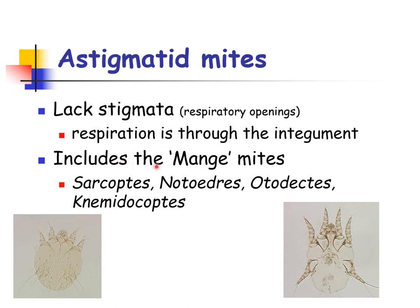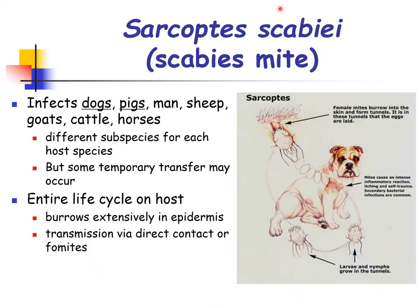The mange mites include Sarcoptes, Notoedres, Otodectes, and Knemidocoptes. Starting with Sarcoptes scabiei, also known as the scabies mite, it is a parasitic mite that infests dogs, pigs, man, sheep, goat, cattle, and horses. Dogs and pigs are considered to be of major veterinary significance.